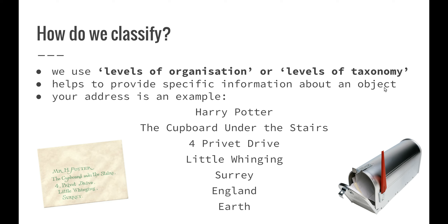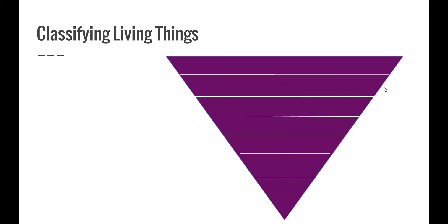For example, Harry Potter lives in the cupboard under the stairs at 4 Privet Drive, Little Whinging, Surrey, England, Earth. Earth — the planet — is the largest group. England narrows it down to the country, Surrey into the region, Little Whinging is the same as our suburbs in Australia, Privet Drive is our street, and even more specific is the cupboard under the stairs. Lastly, there's only one person — Harry Potter — which is what we want with our levels of organization: taking it all the way down to the species level. We can classify living things using this inverted triangle to show the levels of organization in taxonomy.